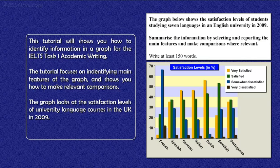This tutorial will show you how to identify information in a graph for the IELTS Task 1 Academic Writing. The tutorial focuses on identifying the main features of the graph and shows you how to make relevant comparisons. The graph looks at the satisfaction levels of university language courses in the UK in 2009.